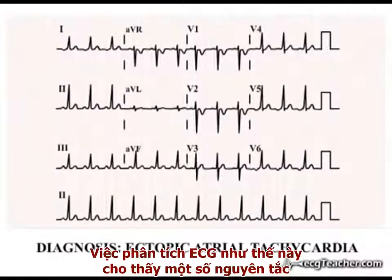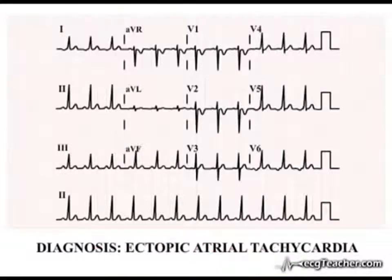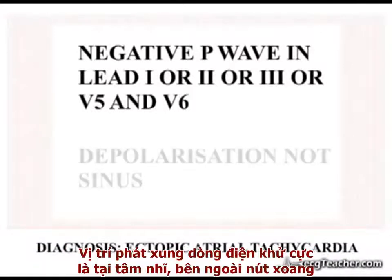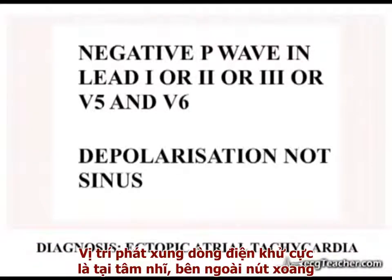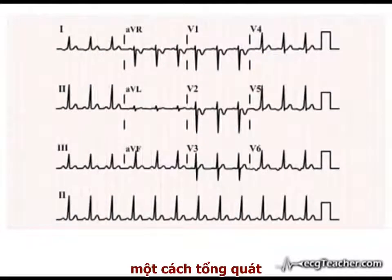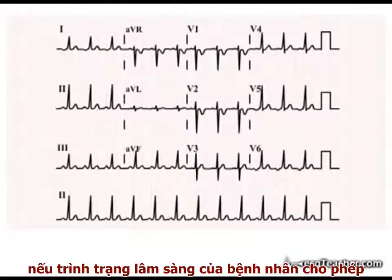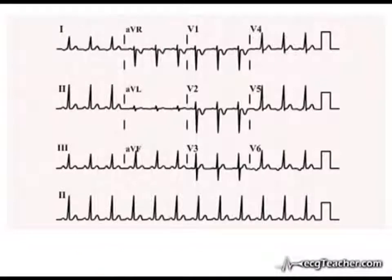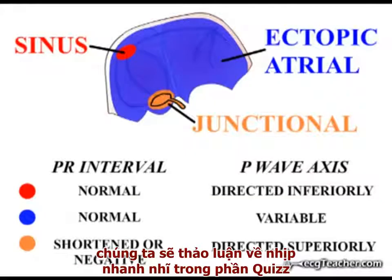Analysis of this ECG illustrates a number of principles. Firstly, in general, if P waves are negative in any of leads 1, 2 or 3, or V5 and V6, the origin of atrial depolarisation is ectopic — that is, it lies outside the sinus node. Secondly, as a general point, if the patient's clinical condition allows it, a full 12-lead ECG should always be obtained when trying to diagnose an arrhythmia. We will discuss ectopic atrial tachycardia again in the quiz section.